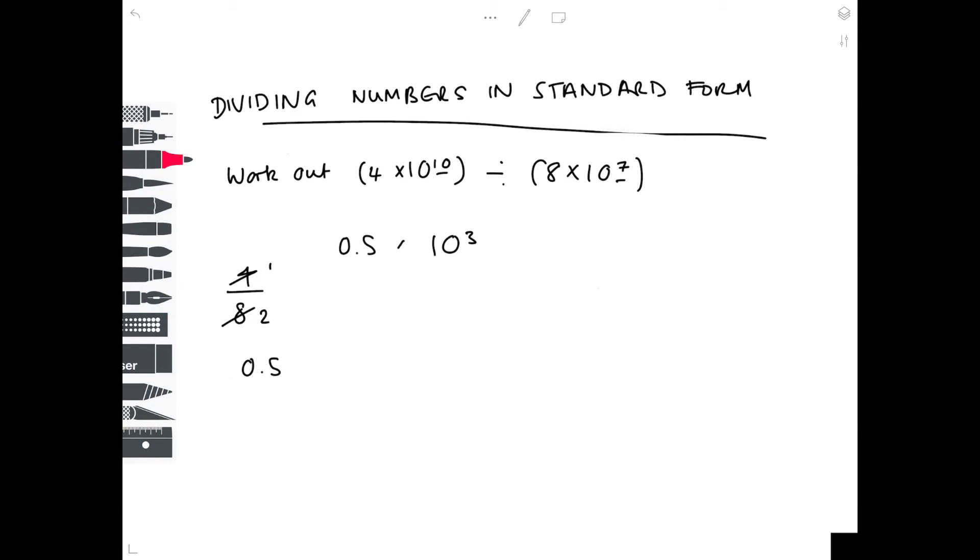Actually, 0.5 is not big enough. It doesn't count as a number placed in standard form, so we have to multiply it by 10. So it becomes 5 times 10 to the 2 to account for the fact we've moved that decimal point along.